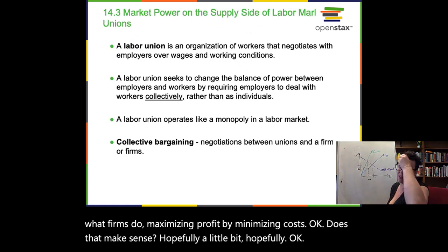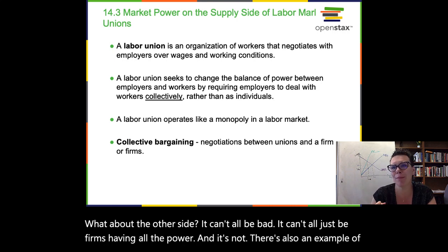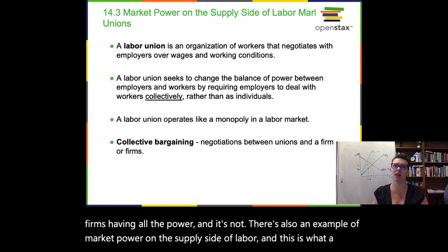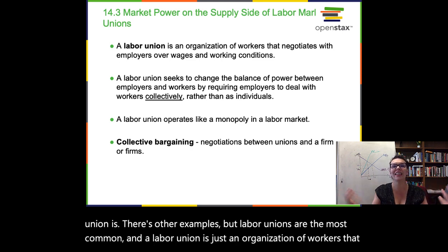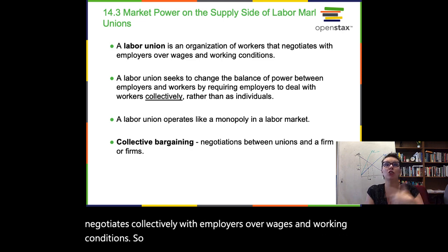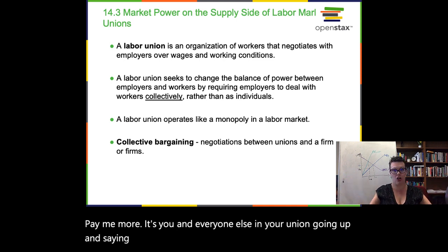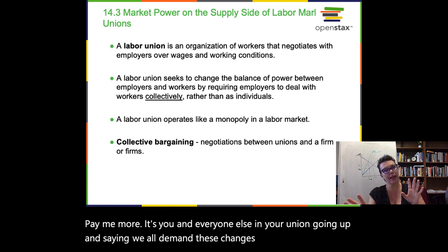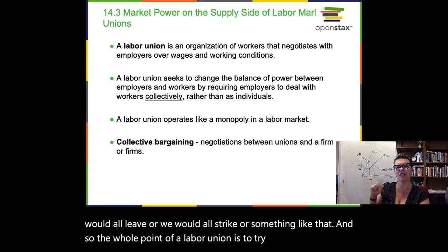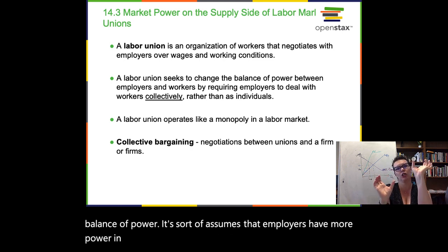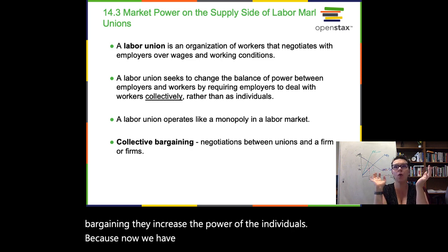It can't all just be firms having all the power — there's also an example of market power on the supply side of labor, and this is what a labor union is. A labor union is an organization of workers that negotiates collectively with employers over wages and working conditions. Rather than just you going to your boss and saying 'pay me more,' it's you and everyone else in your union saying 'we all demand these changes — and if we don't get it, we would all strike.' The whole point of a labor union is to try and change the balance of power, assuming employers have more power in a labor market than workers do. By collectively bargaining, they increase the power of the individuals.